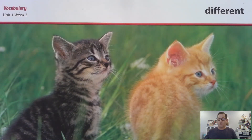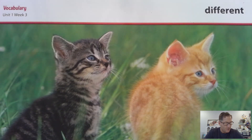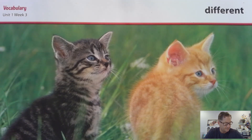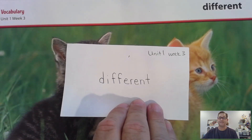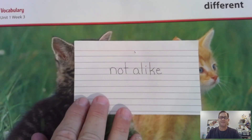Another word in this week's selection is different. Say that word with me: different. When things are different, they are not the same as other things. For example, the brown kitten is different than the orange kitten. How are a horse and a cat different? Write different on one side of your card, and on the other side write: not alike.